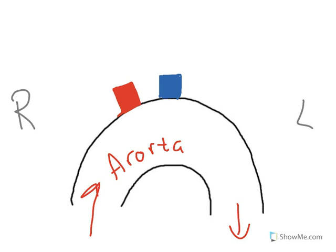And then lastly, on the left side, you have the left subclavian artery. Again, we always have a left and a right — so where is the right? And that's where I promised I would revisit the brachiocephalic trunk on the right side.